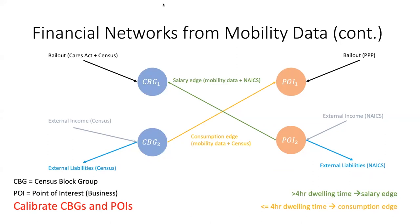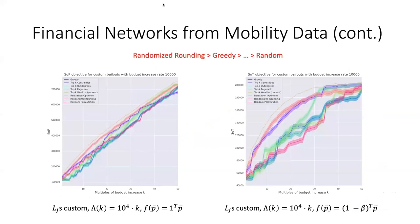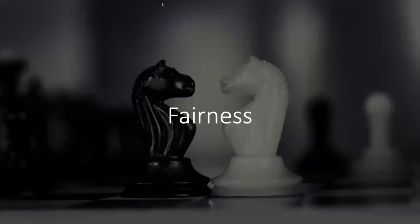For people with dwelling time less than four hours, we add a consumption edge from the census block group to the business, with value equal to the combined average consumption for that business type according to the Economic Census. Using the US Census and NAICS, we estimate the rest of the internal and external liabilities for both census block groups and businesses. We are careful to calibrate the network by considering subsets of census block groups that interact with specific points of interest, so that network effects are non-negligible. We provide bailouts to census block groups following the US CARES Act rules for stimulus checks during COVID-19 and using demographic data. For points of interest, we gather data from the Paycheck Protection Program to calculate calibrated bailout amounts. We observe that the randomized rounding algorithm performs better than the greedy algorithm, followed by all centrality-based heuristics on the unweighted graph.